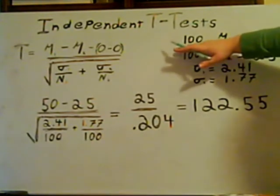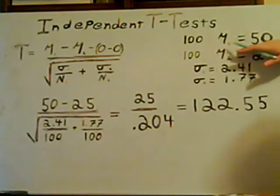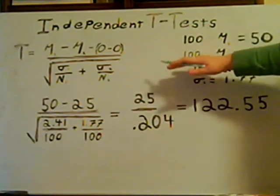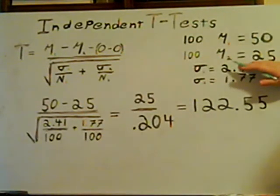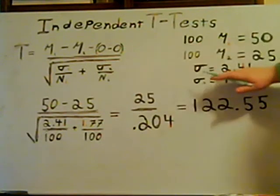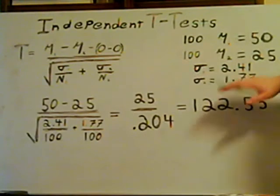For brand A, we have a sample size of 100 and the mean number of problems reported was 50. For brand B, we also have a sample size of 100 and the mean number of problems reported were 25. The standard deviation for brand A is 2.14 and the standard deviation for brand B is 1.77.